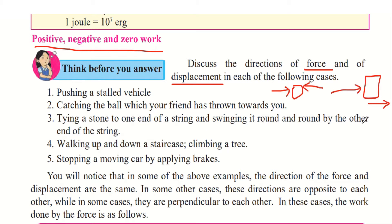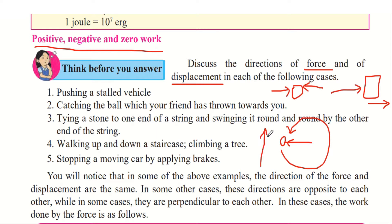Tying a stone to one end of a string and swinging it round and round: the stone is attached to a string and moves in a circular direction. The force applied is toward the center along the string, and the displacement is in the round direction. For climbing a tree, the displacement is upward but the force you apply against the tree is perpendicular — so force and displacement are in perpendicular directions.